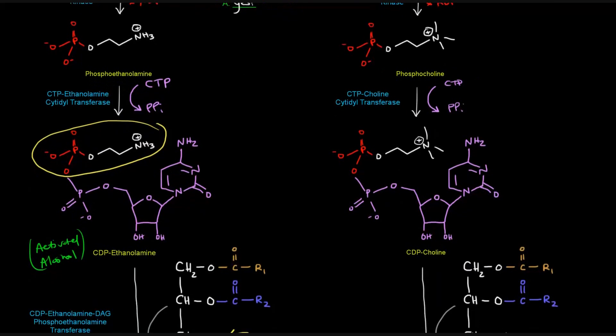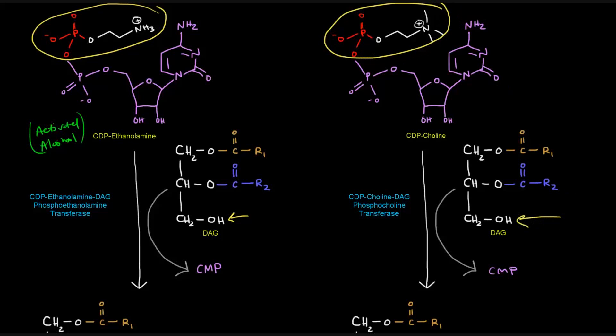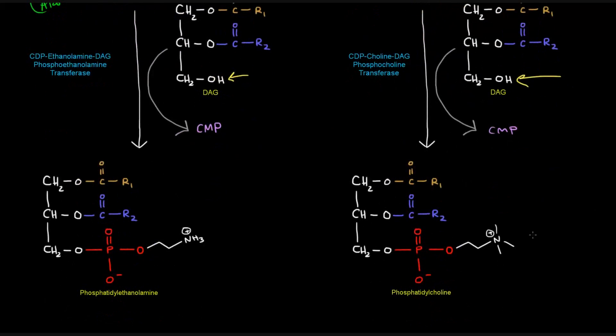Now, we have a CDP-choline, and that CMP portion is going to fall off, and be replaced by the DAG. So that we can get that phosphocholine portion basically attached to the third carbon's oxygen onto diacylglycerol. That will be catalyzed by CDP-choline, diacylglycerol, phosphocholine transferase, again, transferring this portion right here to give us phosphatidylcholine. That's the process there.